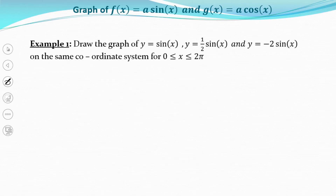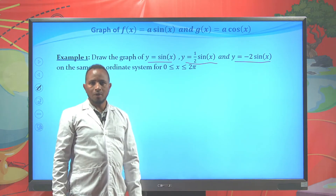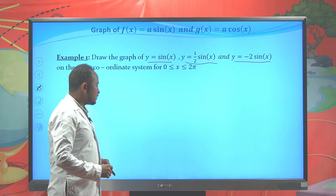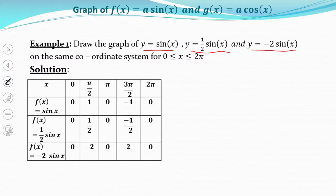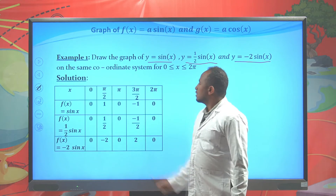First, let's see the graph of f(x) = a·sin(x) and f(x) = a·cos(x). Let's try to draw the graph of y = sin(x), y = ½sin(x), and y = -2sin(x) for the interval from 0 to 2π. To draw the graph, first let's prepare a table for these functions.